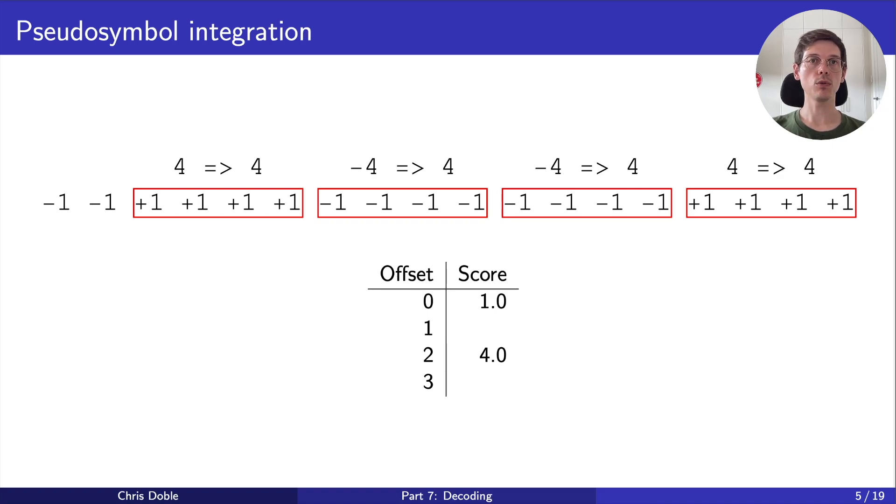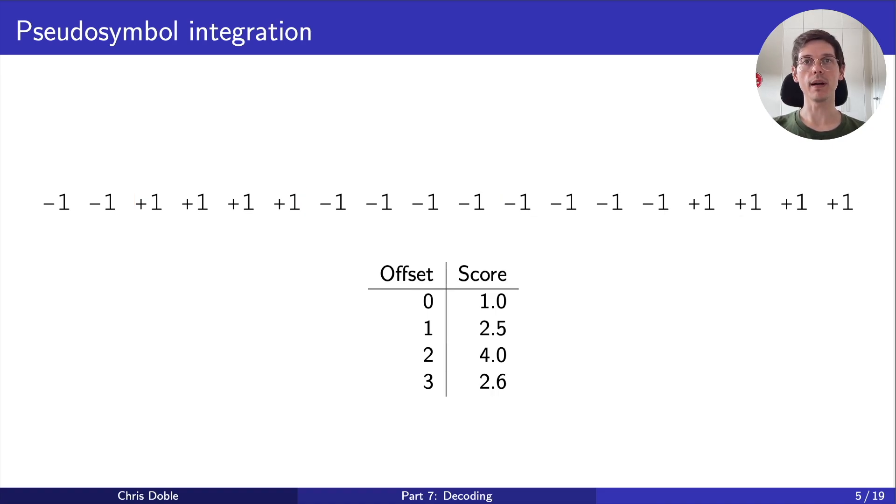After testing all possible groupings, we pick the one with the greatest score. This tells us how to best group pseudo-symbols to match the underlying navigation message bits. We only need to do this once, then we can group each 20 pseudo-symbols as they arrive, and determine which value occurs most frequently within the group to produce a pseudo-bit.